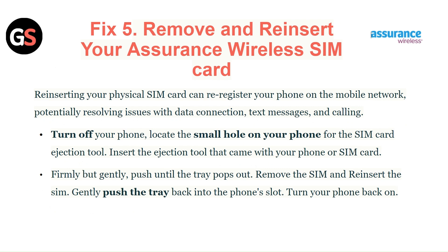Fix 5: Remove and reinsert your Assurance Wireless SIM card. Reinserting your physical SIM card can re-register your phone on the mobile network, potentially resolving issues with data connection, text messaging, and calling. Turn off your phone, locate the small hole for the SIM card ejection tool, and firmly but gently push the tool until the tray pops out. Remove the SIM card, reinsert it, gently push the tray back in, then turn your phone back on.